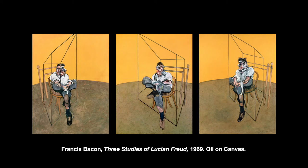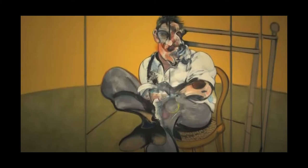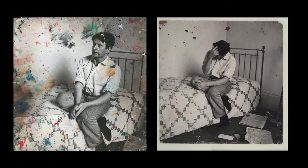In Bacon's typical abstract and distorted style, the three panels show Freud sitting on a wooden chair within a kind of geometric cage. Freud is sitting with his legs crossed, appearing very relaxed in his posture, even though his face is obscured and unclear. The color choice for the backdrop is unusually bright for Bacon, who typically chose darker, moodier tones. Behind each figure is what appears to be a headboard of a bed, originating from the set of photographs of Freud by John Deacon, which Bacon used as reference.